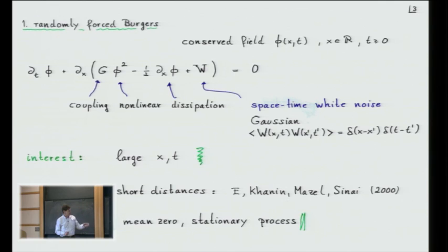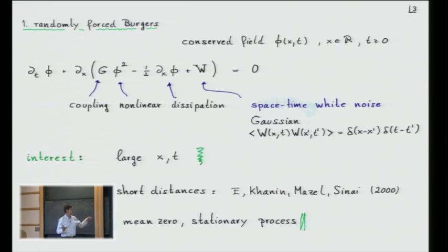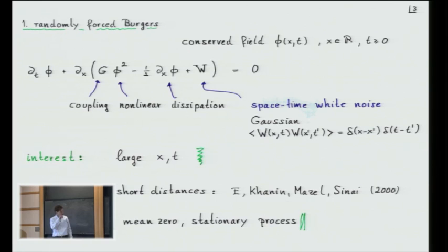People have looked at this equation — there's well-known work by Akhahn, Marcel, and Sina from about 14 years back. They looked at exactly the same equation, but they were interested in a totally different limit: the solution behavior at very small distances. I don't take this equation seriously at short distances, but I want to understand the long-time behavior.